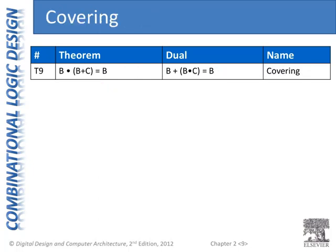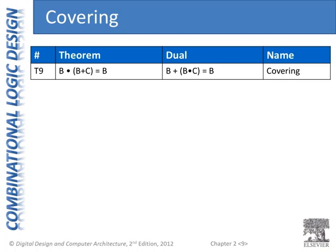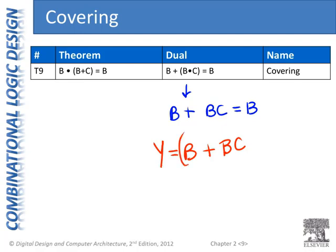Now we get into the theorems unique to Boolean algebra. The first is the covering theorem, T9: B AND (B OR C) is just equal to B. We can also talk about its dual: B OR (B AND C) is also equal to B. We've actually seen this expression in a prior module — this is like saying you can get a yurt if you bring a yurt, or you bring a bonnet and a cat.